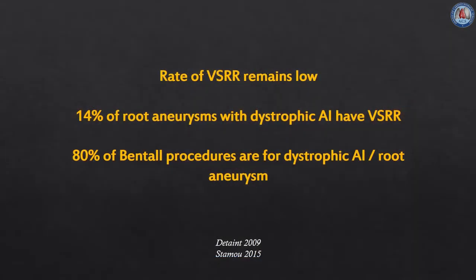According to the Euro Heart Survey on valvular heart disease, dystrophic AI represents the most common etiology of AI in western countries. Although patients with dystrophic AI are good candidates for repair, only less than two percent of patients have their valve spared. The recent STS database showed only 14 percent of patients who underwent aortic root surgery received a valve-sparing root procedure. This leaves 80 percent of root procedures for AI and/or root aneurysm being performed as a Bentall procedure.